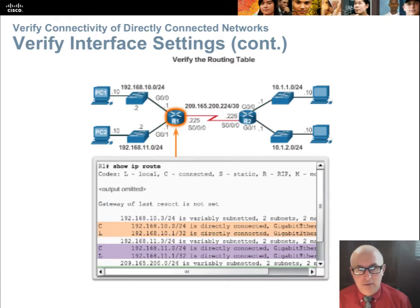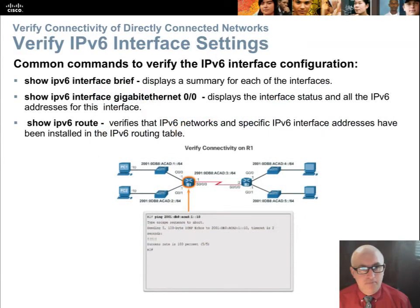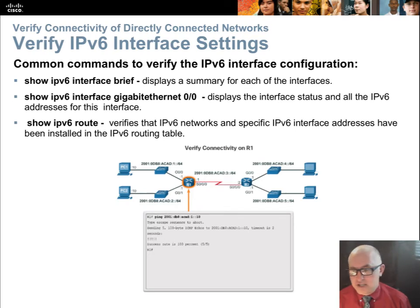That's looking at the routing table — C's are directly connected interfaces. We have very similar commands for doing the same thing with IPv6: we literally just add 'v6' to the command and get the same information.